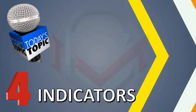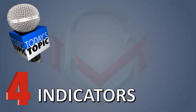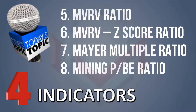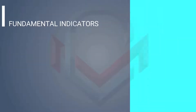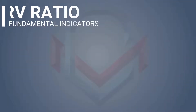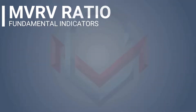We will see four types in this episode. We will cover the MVRV Ratio, MVRV Z-Score Ratio, Mayer Multiple Ratio, and the Mining Price-to-Break-Even Ratio. We will start with the first indicator, the MVRV Ratio.